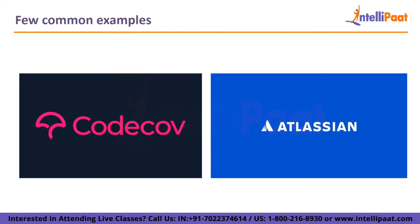6. Atlassian: A number of flaws were identified by Checkpoint Research (CPR) in November 2020 that, when combined, can be used to take control of an account and numerous Atlassian apps connected via SSO. Because the attacker can install backdoors to use in the future after successfully exploiting these flaws, this vulnerability could lead to a supply chain assault with significant damage that won't be discovered until it's too late. The Atlassian teams were informed of this in a responsible manner by CPR, and a solution was implemented to ensure users could safely continue to communicate information across the various platforms.